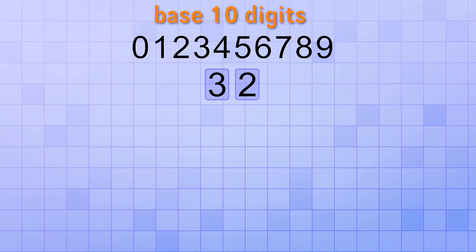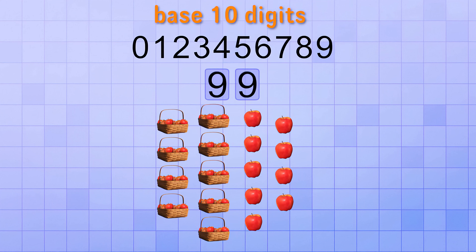In fact, using only our 10 digits and these two number places, we can count all the way from 0 up to 99. At 99, both of our number places are maxed out with the highest digits, and we won't be able to count any higher unless we get another number place.